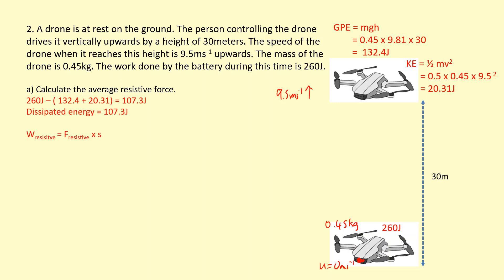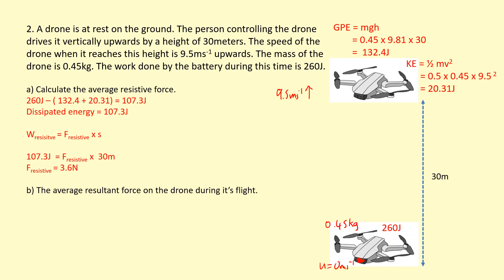The dissipated energy is the work done against resistive forces. That allows us to calculate the resistive force by dividing the dissipated energy by the distance moved parallel to the resistive force — which is the height in this case, since the drone moves directly upwards and air resistance acts downwards, which is still parallel. Putting those numbers in gives a resistive force of 3.6 newtons.